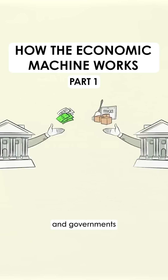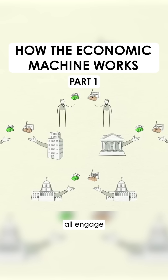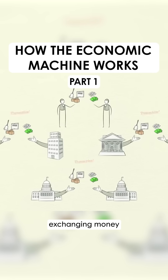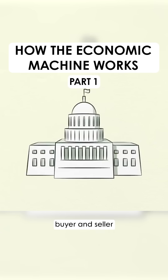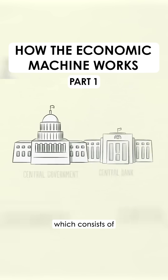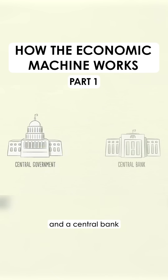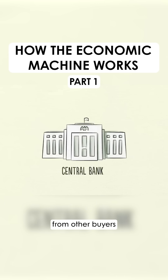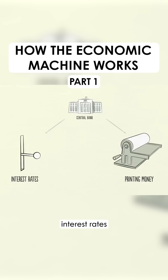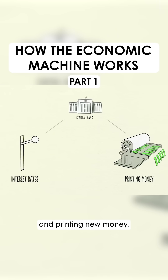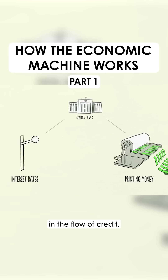People, businesses, banks, and governments all engage in transactions, exchanging money and credit for goods, services, and financial assets. The biggest buyer and seller is the government, which consists of two important parts: a central government that collects taxes and spends money, and a central bank, which is different from other buyers and sellers because it controls the amount of money and credit in the economy. It does this by influencing interest rates and printing new money. For these reasons, the central bank is an important player in the flow of credit.